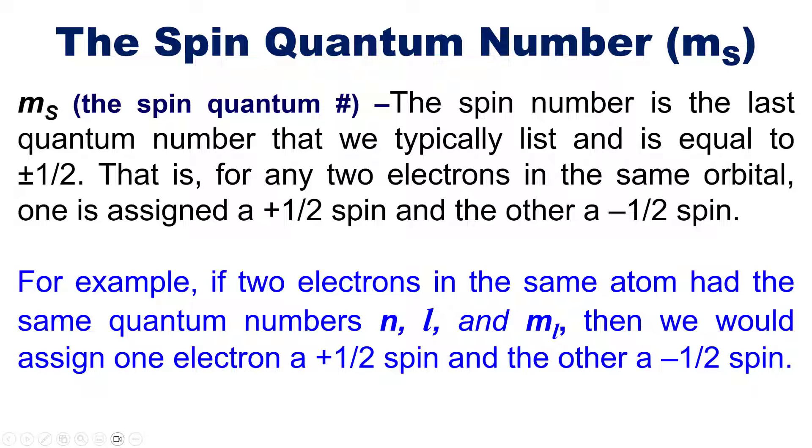For example, if two electrons in the same atom had the same quantum numbers n, l, and m sub l, then we would assign one electron a plus one-half spin and the other a minus one-half spin.